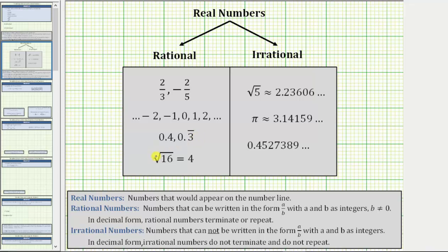And then finally, we have the square root of 16, which simplifies perfectly to four, and we know four is rational.